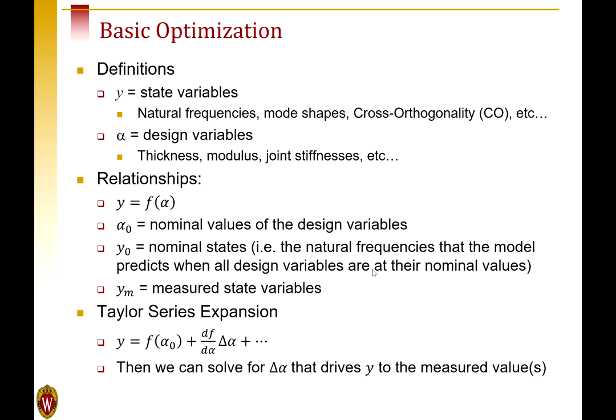We'll need to know a few basic definitions to understand what we're going to do with optimization. We'll use Y for the state variables. These could be all kinds of things. Natural frequencies are the most common and typical. We could also use the mode shapes, though metrics like the cross-orthogonality and the MAC are very common optimization state variables. So these are variables we've measured and we're trying to drive them to some value. We're trying to do that by changing design variables like the thickness, modulus, all of these parameters in the model.